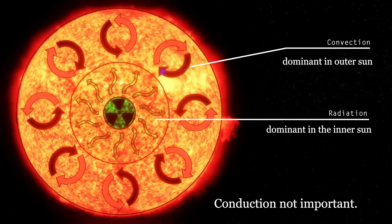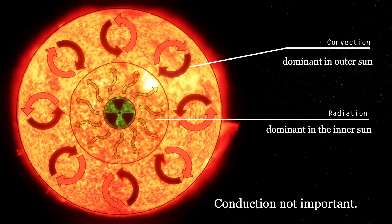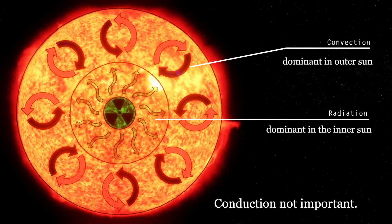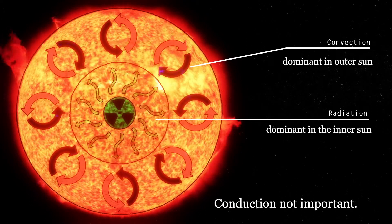This is our second video looking at thermal transport in the sun and will specifically study convection, which is the dominant mechanism in the outer part of the sun.